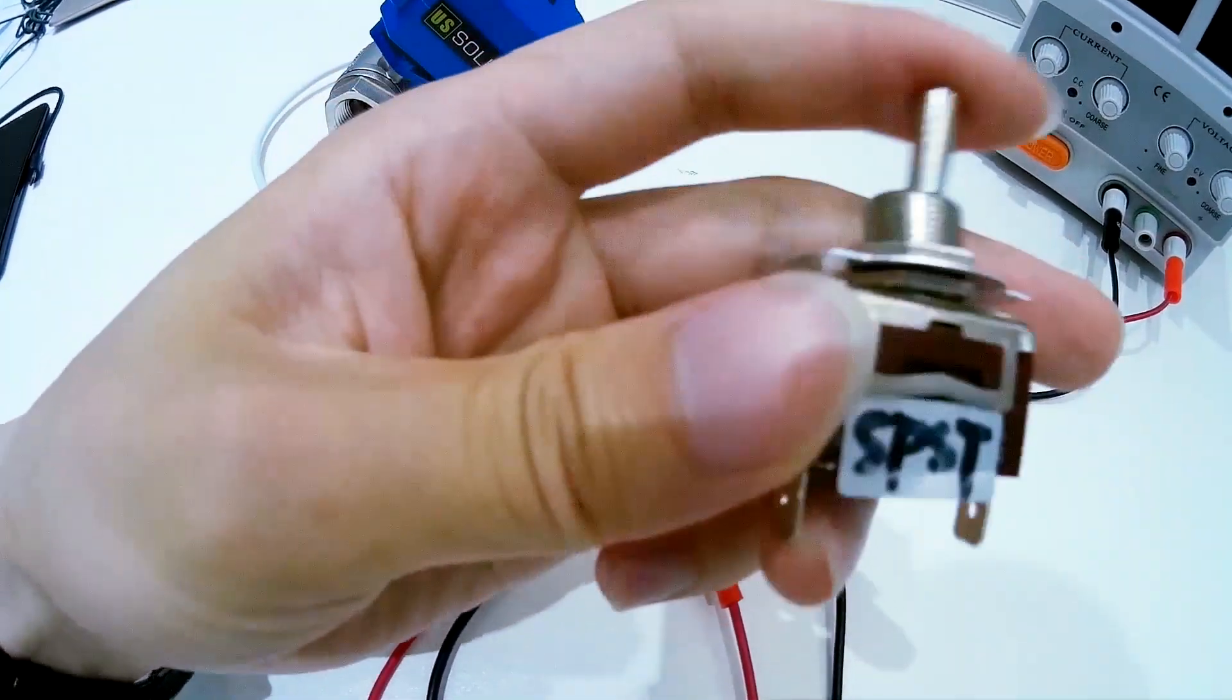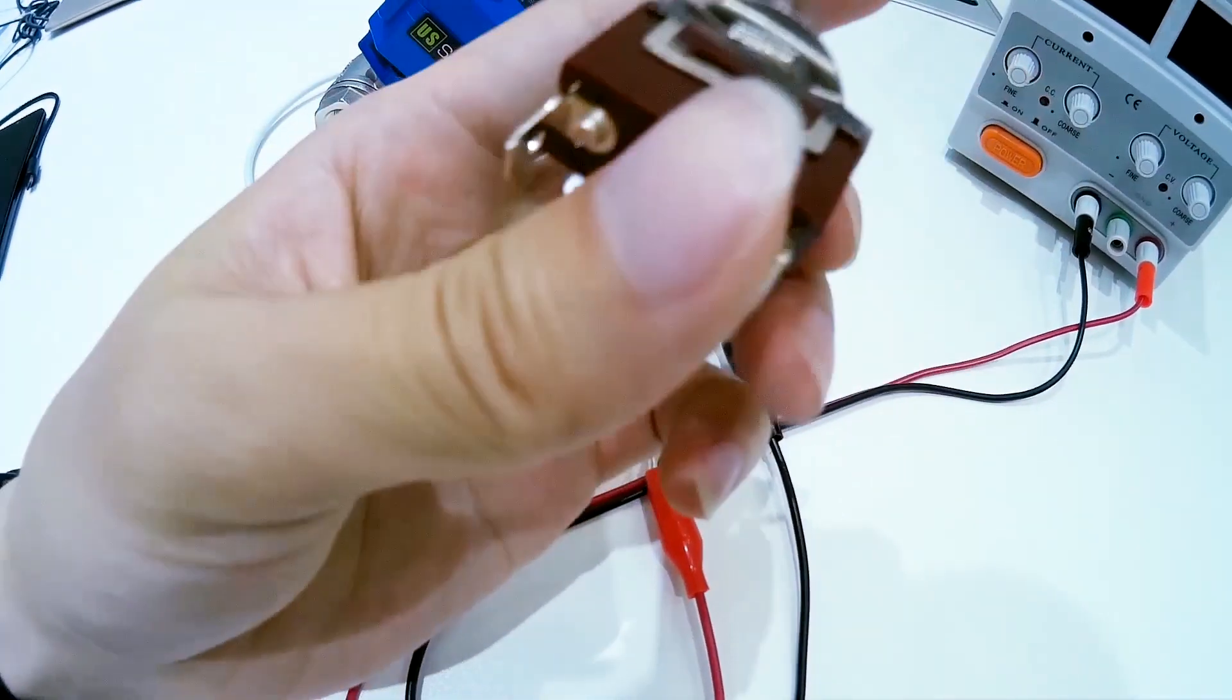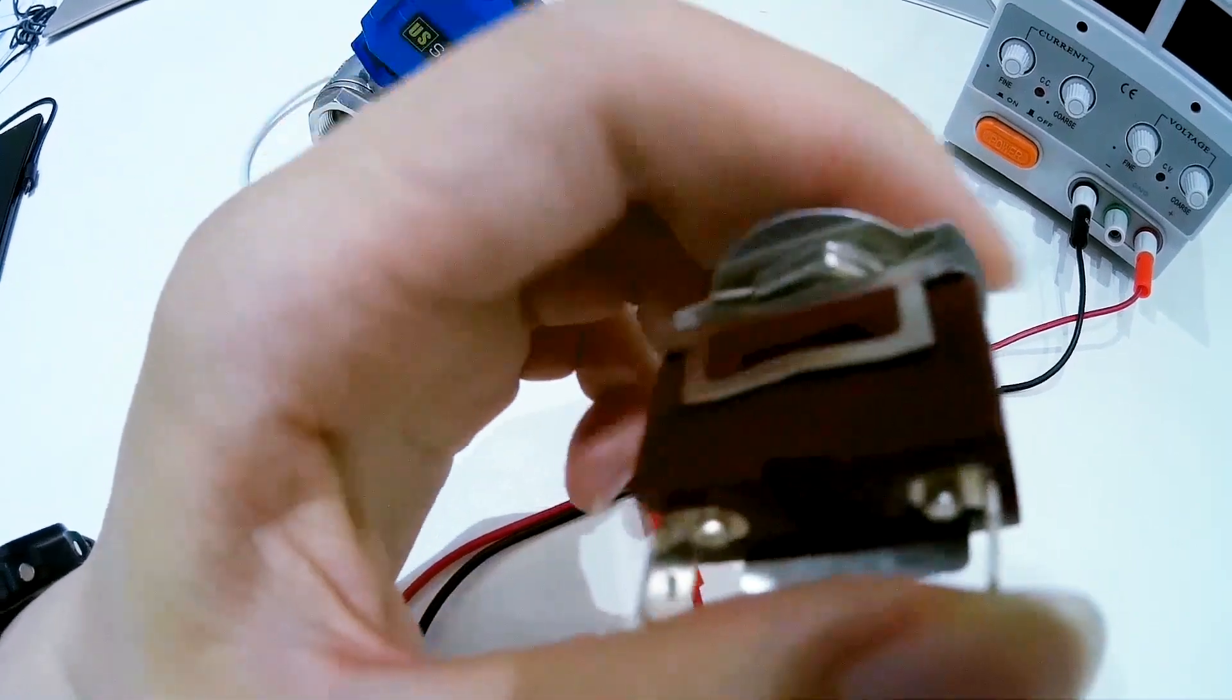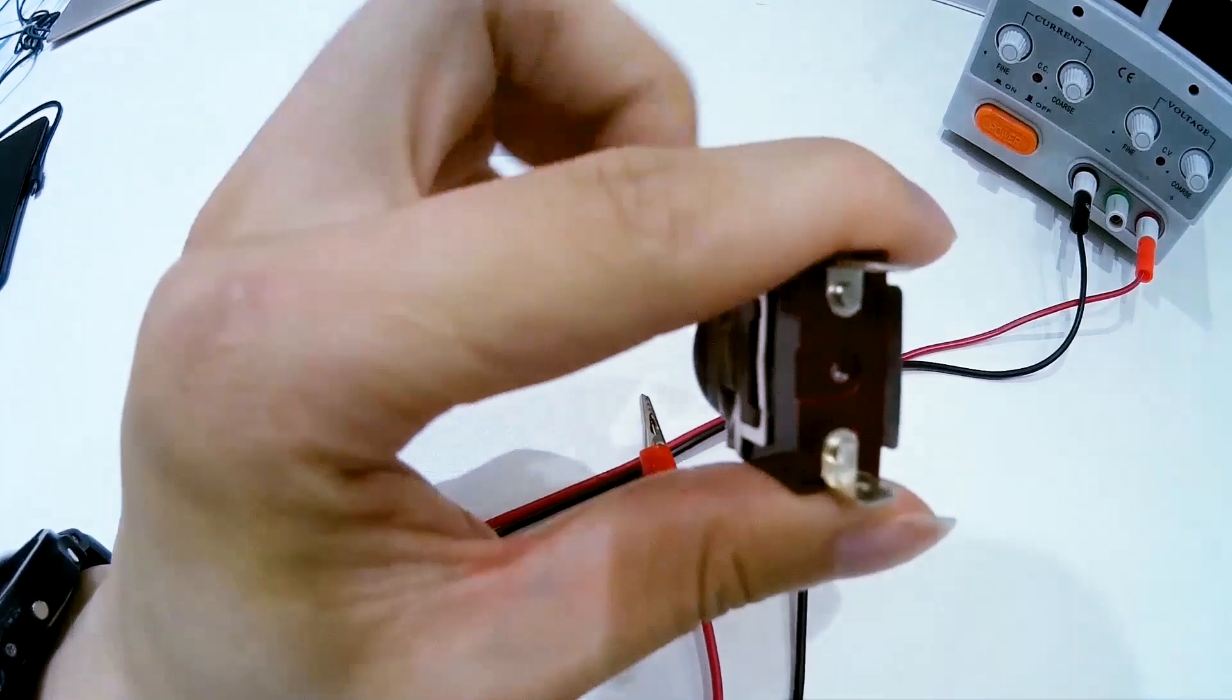A simple on-off toggle switch, we usually call this SPST, single pole, single throw. So the two terminals are either connected together or disconnected from each other.